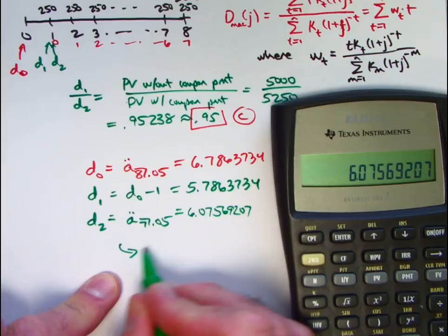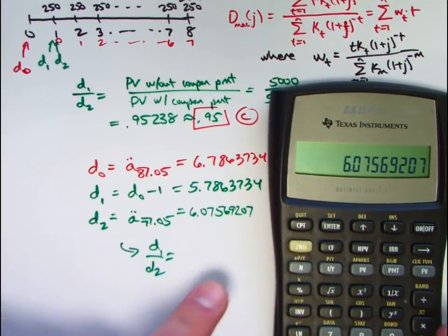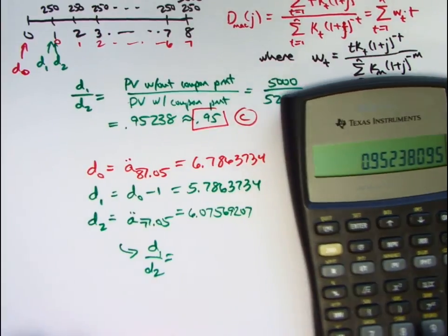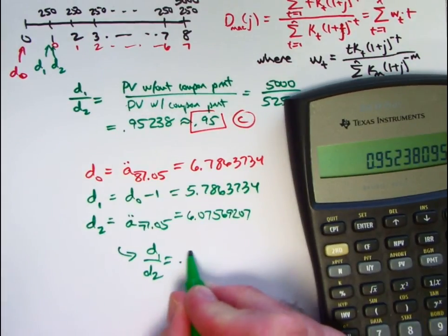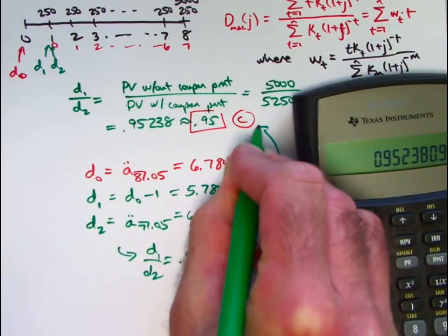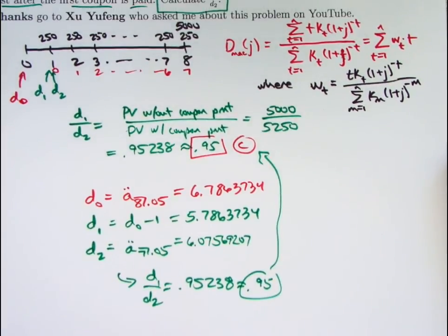So now D1 divided by D2. Hopefully it's the same thing. So I'll take the reciprocal of this, multiply by D1, which is in register 1. And lo and behold, we do get the same answer, 0.95238, about 0.95. Same answer as we got before. So that's great. That's an alternative way to do it, but to use that alternative method, you would have to know this formula involving A double dot annuity due.